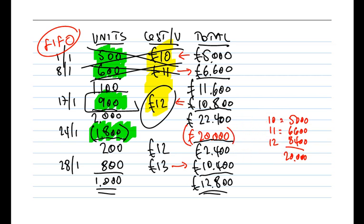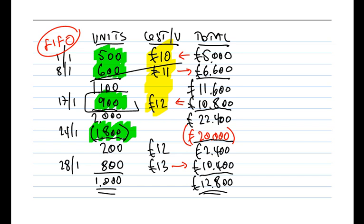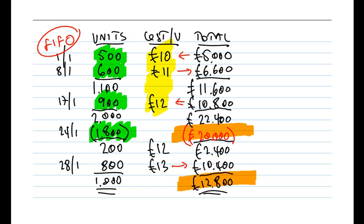To summarize the FIFO position: the value of the issue on the 24th is £20,000, and the value of the closing inventory at the end of the month — the remaining 1,000 units on the 31st of January — is £12,800. Those are the two figures for FIFO.